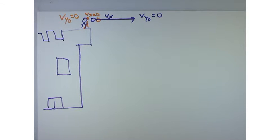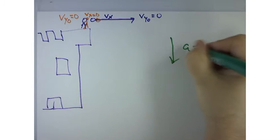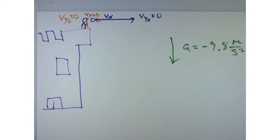Now, what acts on both the ball and the stone? Gravity. So both of them will have a constant acceleration in the negative direction of negative 9.8 meters per second squared. So think in just terms of the y direction.